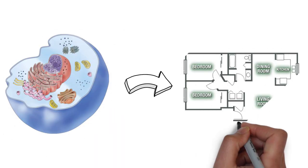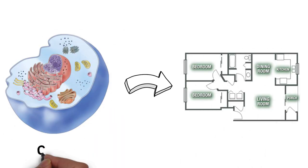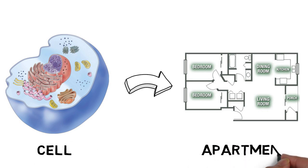The cell is just like an apartment. Looking at the diagram of a cell on the left and an apartment on the right, it's not difficult to see features that perform similar functions in the cell and in the apartment.